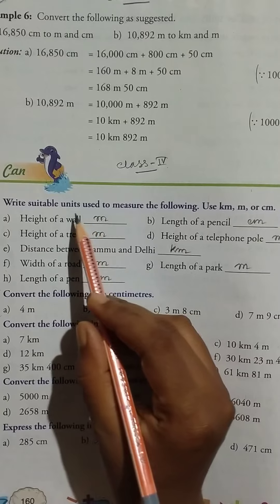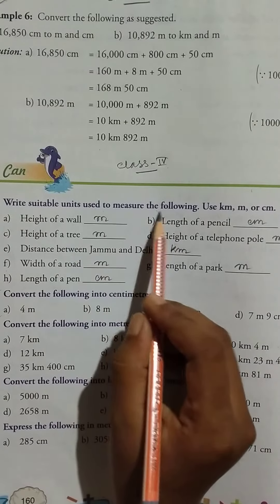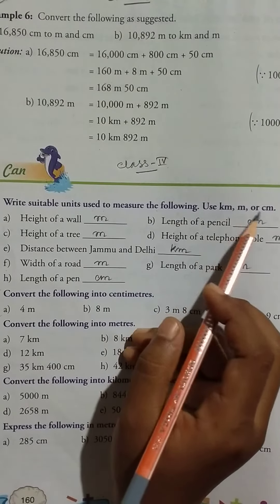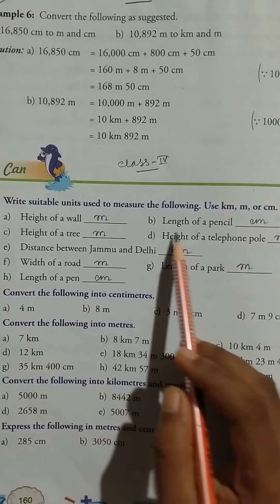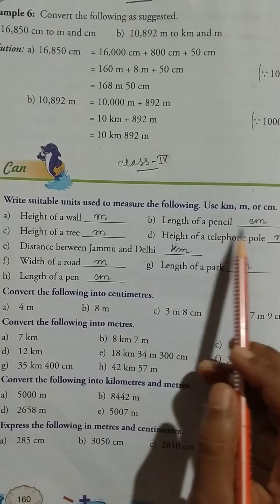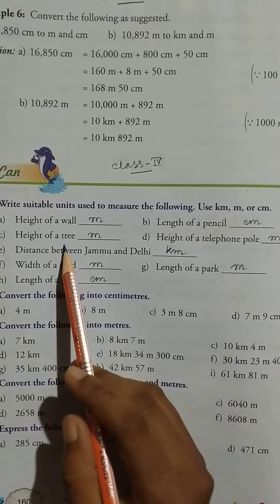Write suitable units used to measure the following. Use kilometer, meter, or centimeter. Height of a wall: meter. Length of a pencil: centimeter. Height of a tree: meter.